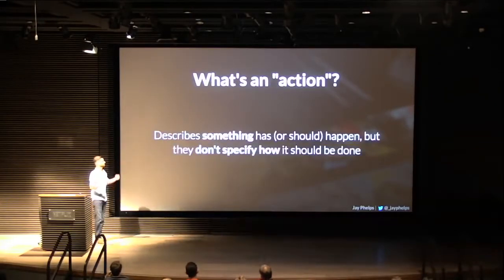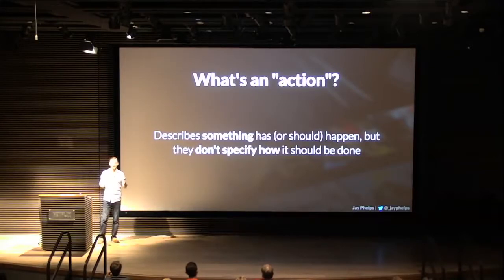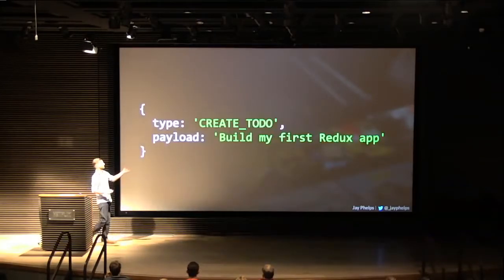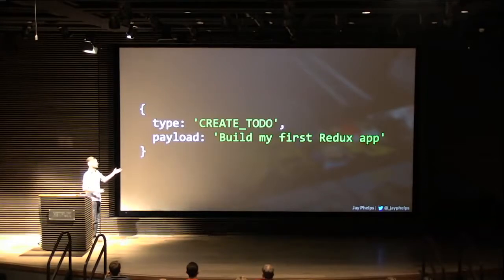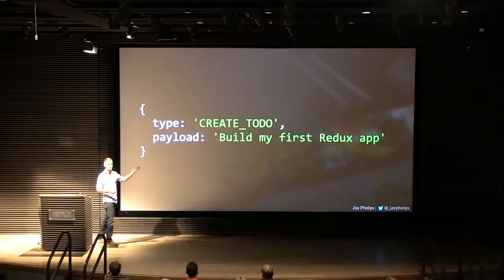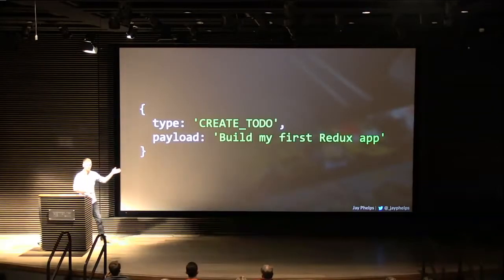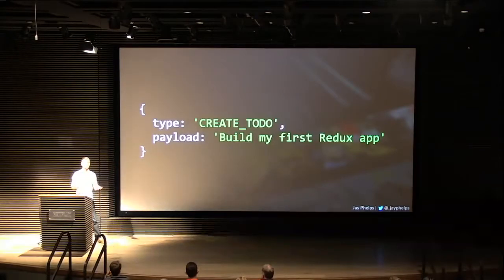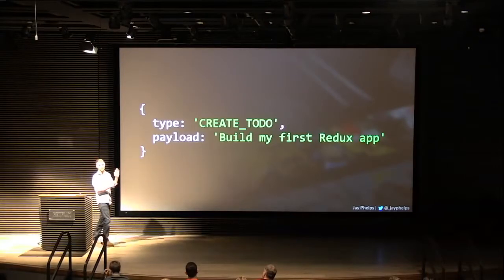What is an action? It's going to describe something that has or should happen, but it doesn't say how. If we look at a simple create-to-do action, you've got the intent — you want to create a to-do and you have the content for it — but it doesn't say how: go to the server, store this in a database, local storage. There's no async, no side effects. It's completely serializable as an intent.